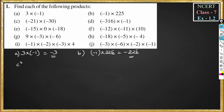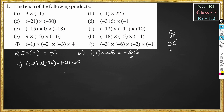Part c: minus 21 into minus 30. Minus into minus is plus, so this becomes 21 into 30. Computing: 21 into 30 gives 630, so the answer is plus 630.